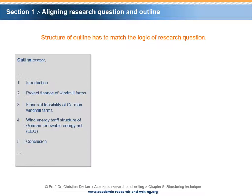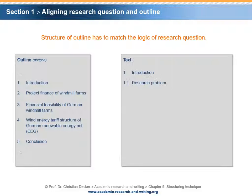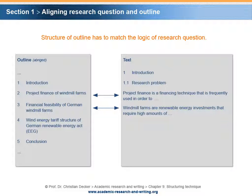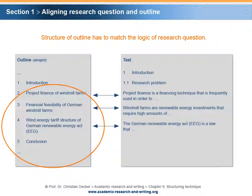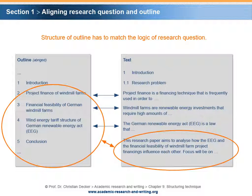Of course, the outline has to be related to the research topic. The first paragraph of the research problem has to correspond with the headline of Chapter 2. The second paragraph of the research problem has to correspond with the headline of Chapter 3. The third paragraph of the research problem has to correspond with the headline of Chapter 4. The overall structure of the outline has to match the text of the subchapter research problem as well as the implicit aim stated in the last paragraph addressing the research question.